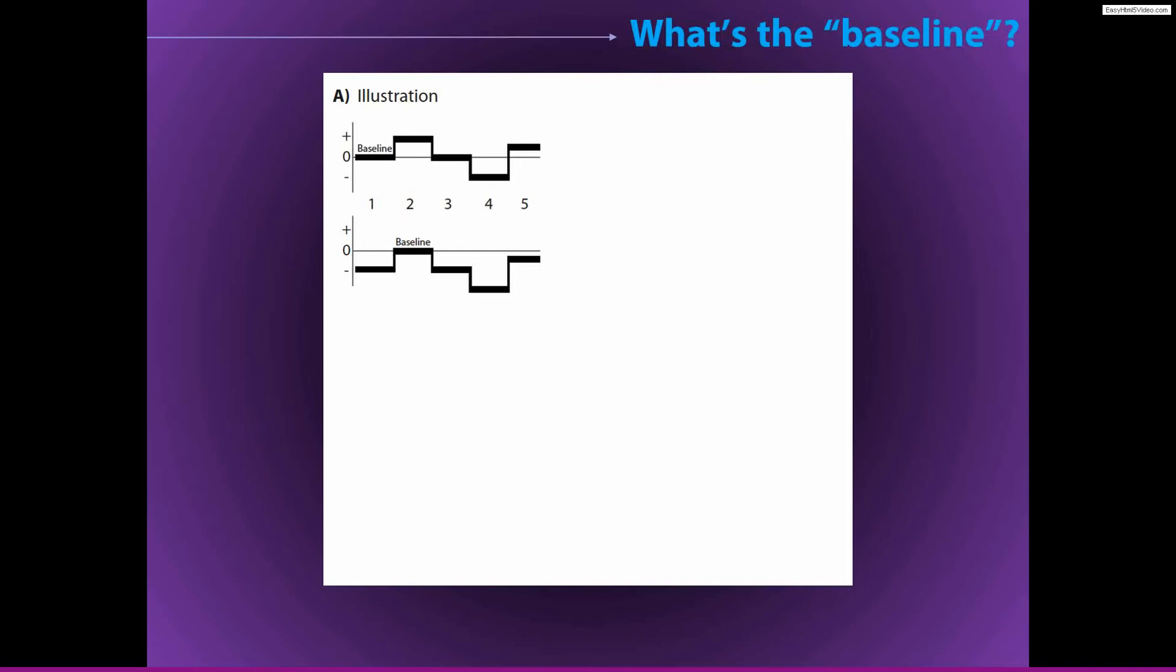The important thing to keep in mind is that baseline normalization does not change the time course of any of the data. The only thing that baseline normalization does is shift the y-axis, so it's going to change what values are zero, what values are negative, and what values are positive. Otherwise, baseline normalization is not fundamentally changing the actual time series of activity.